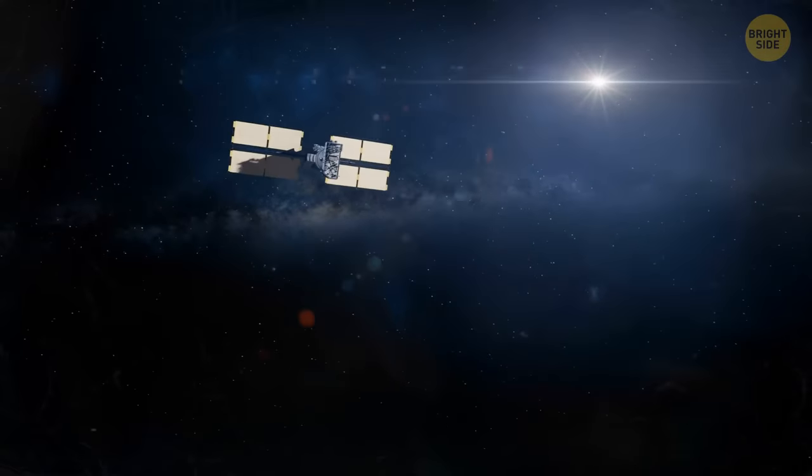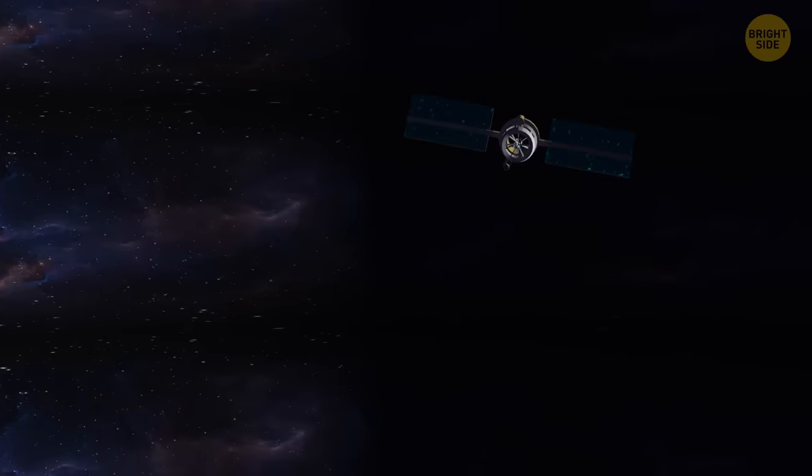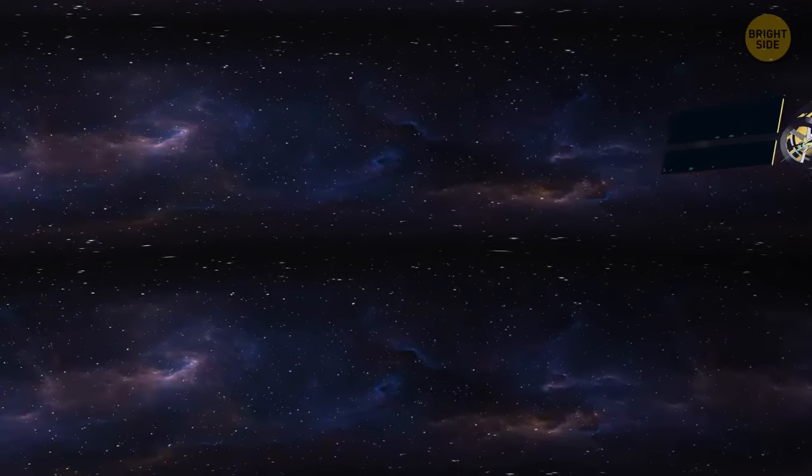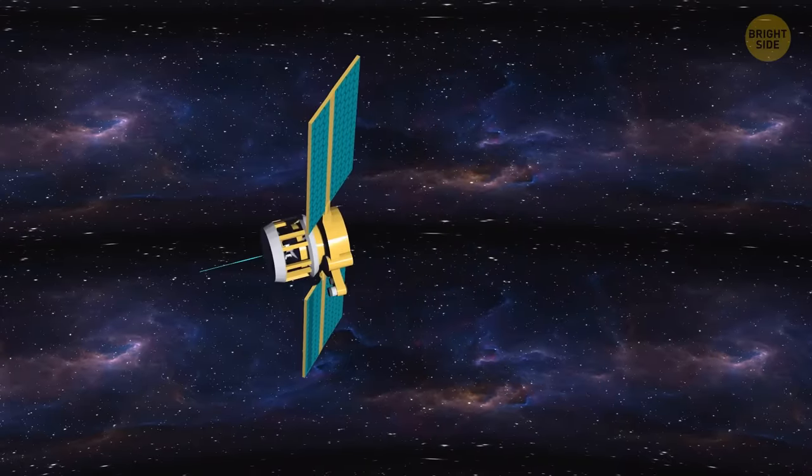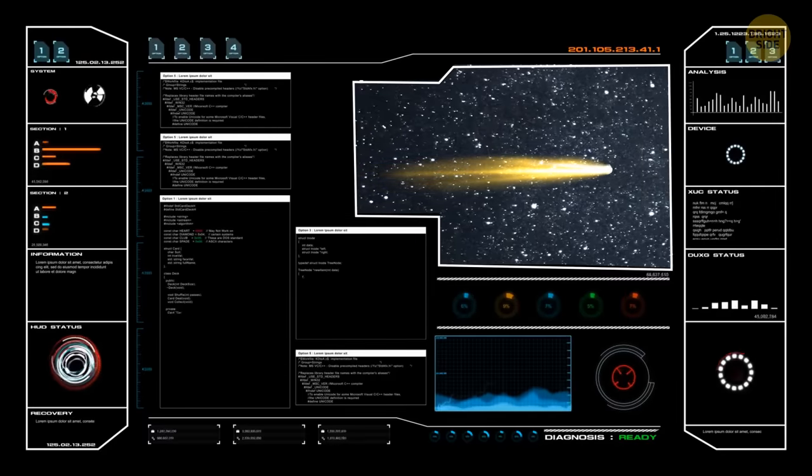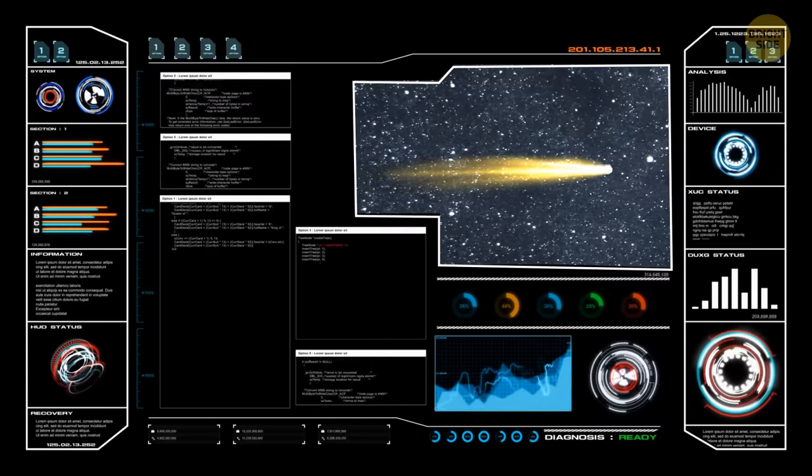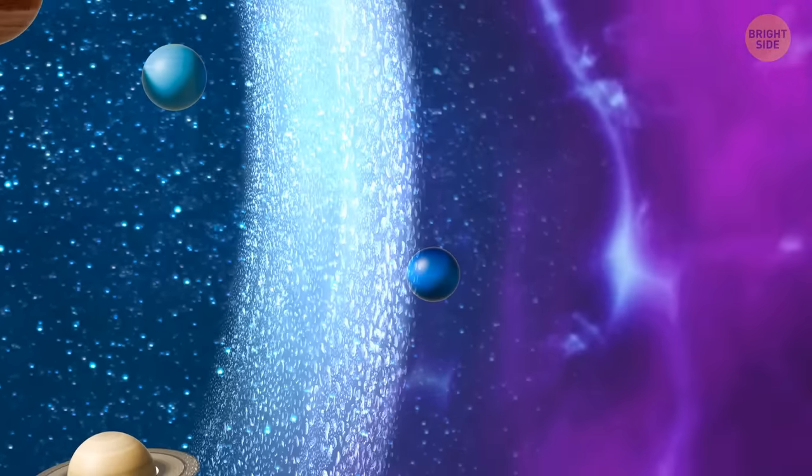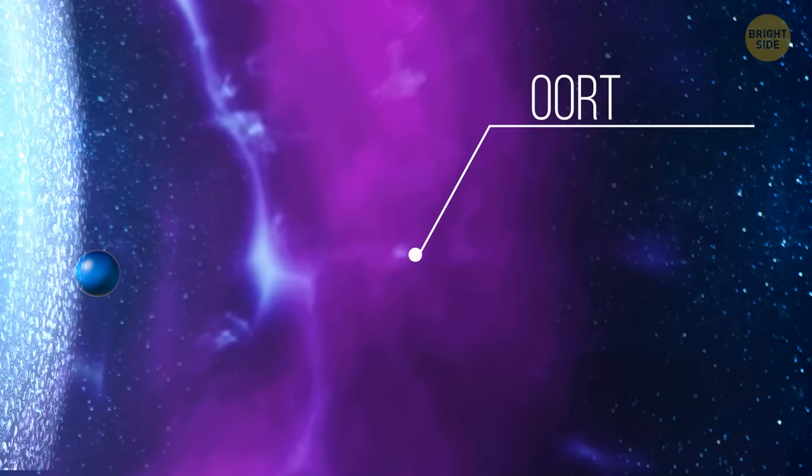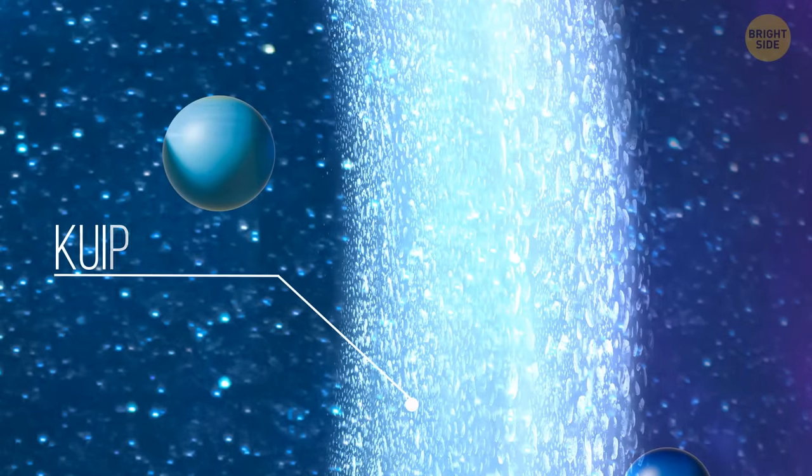Comet Borelli was the second comet to be studied up close by a spacecraft. NASA's Deep Space One approached it in 2001 and gave scientists a detailed report of the comet's black core. This comet is surprisingly lopsided, but the reason for its unusual shape is still up for debate. Halley's comet appears to have formed in the Oort cloud at the outer edges of the solar system. But Borelli is said to come from an icy cloud of rocks beyond Neptune, which is called the Kuiper Belt.